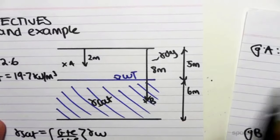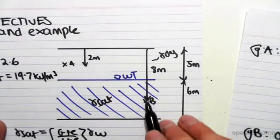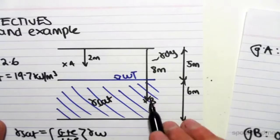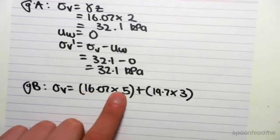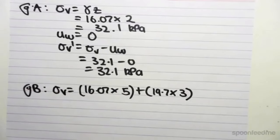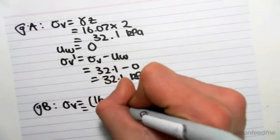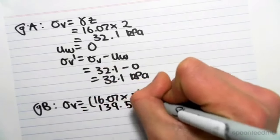So 5 meters to point B is dry, and 3 meters, 8 minus 5, is saturated. So 16.07 by 5 plus 19.7 by 3, so let's work this out.